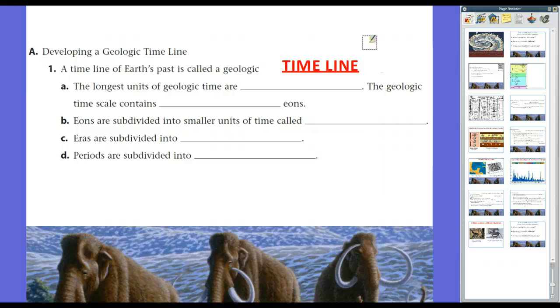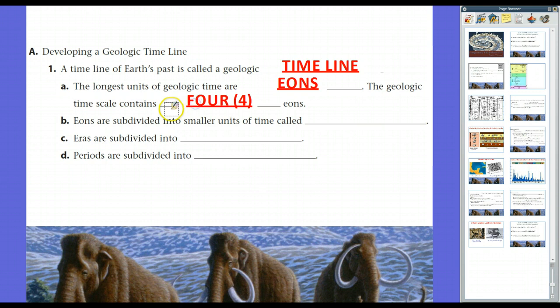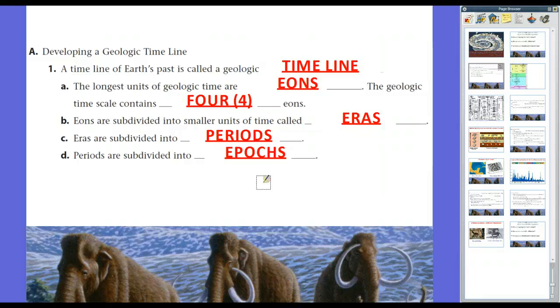There are four units of time in geologic time. They go from big chunks of time all the way down to the smaller ones. The longest units of geologic time are what we call eons. The geologic timescale contains four eons: the Hadean, the Archean, the Proterozoic, and the Phanerozoic era. Eons themselves are subdivided into smaller units of time called eras. These eras are subdivided into periods, and these periods are subdivided into epochs. Think of it this way: Think of eons as days, which are divided into hours (the eras), hours are divided into minutes (the periods), and minutes are divided into seconds (the epochs). So eon, era, period, epoch, just like day, hour, minute, second.